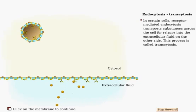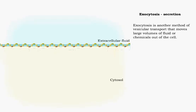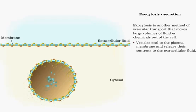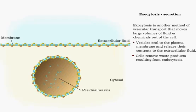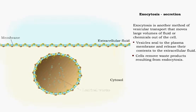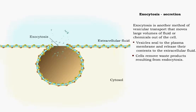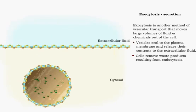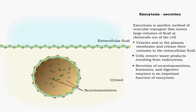Exocytosis is another method of vesicular transport that moves large volumes of fluid or chemicals out of the cell. Vesicles enclosing substances for release seal to plasma membranes and the contents are exported out of the cell. Exocytosis is the way cells eject waste products resulting from endocytosis. Nervous cells release neurotransmitters via exocytosis and secretory cells secrete important substances like digestive enzymes and hormones.